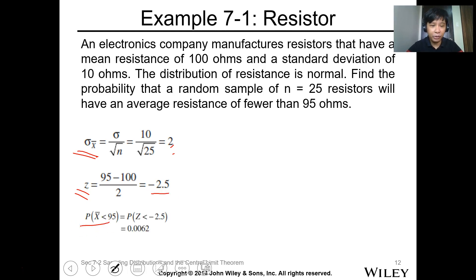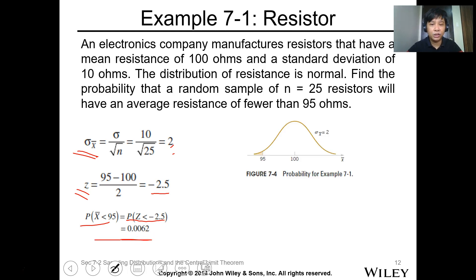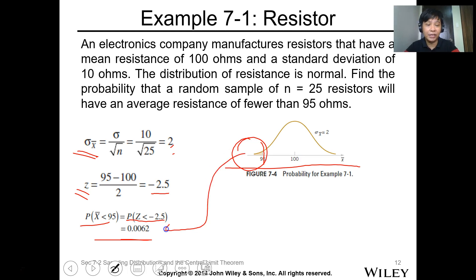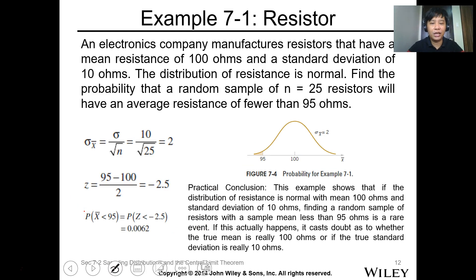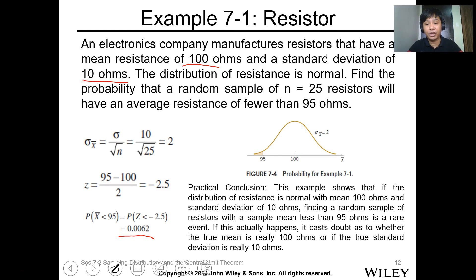So the probability of x-bar less than 95 is just equal to the probability of z less than negative 2.5. From the standard normal distribution, we find the value equal to 0.0062. Looking at the diagram, 95 is here and this is the probability portion. The conclusion is that this shows that it is very unlikely we will get an average value less than 95, because the mean is 100 and the standard deviation is 10 — so getting less than 95 ohms is a rare event when we sample 25 resistors from the population.